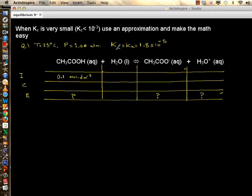So Kc is given, but it's also written as Ka sometimes because it's describing the acid, CH3COOH, ethanoic acid, an organic acid, and it's 1.8 times 10 to minus 5.